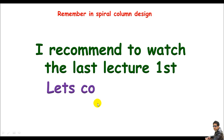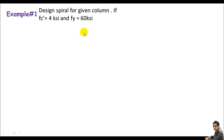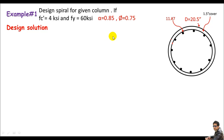I recommend watching those lectures first. Now let's come to spiral design. Here is Example 1: we are asked to design the spiral for a given column. fc' = 4 ksi, fy = 60 ksi, concrete cover = 1.5 inches, diameter = 20.5 inches, main steel is 11 #7 bars. In the solution, remember for spiral columns: phi (θ) = 0.75 and alpha = 0.85, according to ACI codes.